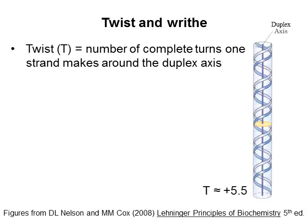So far in these videos, we've seen that twist is the number of complete turns one strand of DNA makes around the duplex axis. Usually the twist for a piece of DNA is the number of base pairs divided by 10. Right-handed twist is defined as positive.